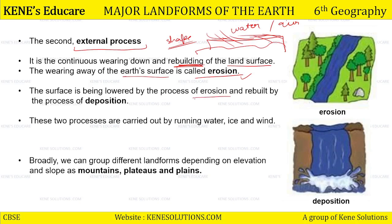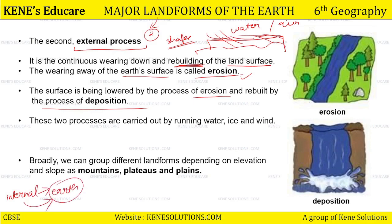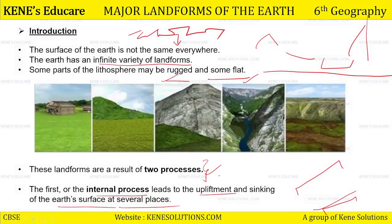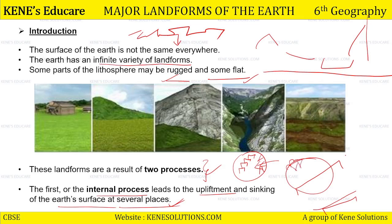The surface is being lowered by the process of erosion and rebuilt by the process of deposition. Landform ke banne ke dho tariqe ho sakti hain — ya toh internal, that means everything is happening internally inside the earth, ya toh kisii tariqe se land ka upliftment ho raha hai ya toh koji maas sink ho raha hai. Aur yae several places pe ho ta raha hai, earth surface ke. Bhoat slow motion mein ho tih hai, iske hume bhoat clearly visible nahi ho tih, but it keeps happening.